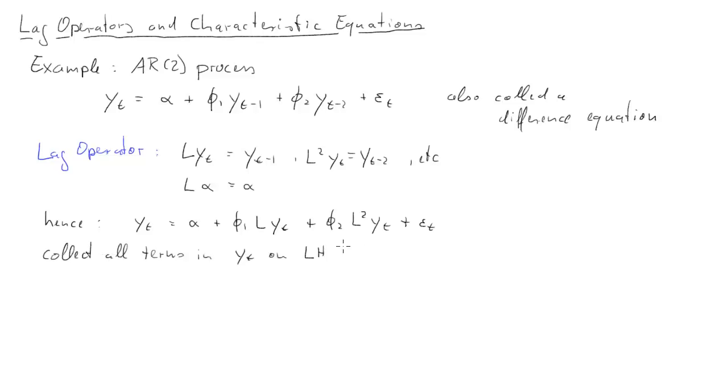What we can now do is we can collect all terms with Y_t on the left hand side of the equation. What we get is this one. We've just moved two terms from the right to the left hand side of the equation. And what we can now do is we can factor out the Y_t because we can see the Y_t appears three times here. So we have 1 minus phi_1 L minus phi_2 L squared times Y_t. And on the right hand side remains unchanged.